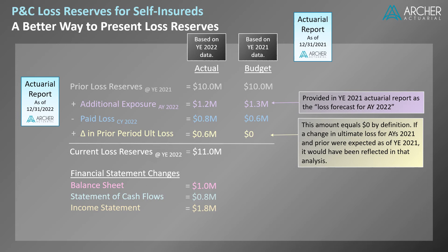Given this information, loss reserves as of year-end 2022 from the perspective of year-end 2021 are expected to equal $10.7 million. Further, the budgeted financial statement changes would be a $700,000 increase in the balance sheet, a $600,000 increase in the statement of cash flows, and a $1.3 million increase in the income statement.